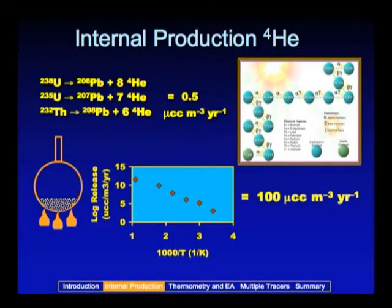We've made some measurements in which the helium-4 production rate appears to be vastly different from this. The measurements are quite simple: we've taken material and placed it into an all-metal flask, pumped away all of the gas, sealed it up, and then heated it for a prescribed period of time. We then put it back on the mass spectrometer and simply measure the amount of helium that has been released in that period of time.